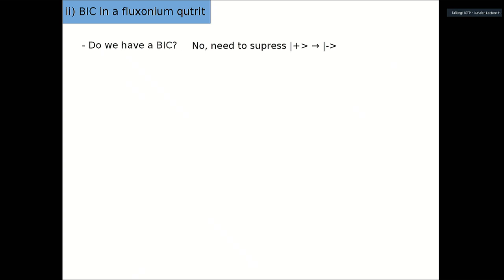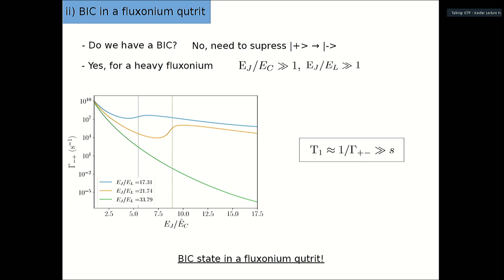Is this a BIC? It doesn't have to be one yet, because even though you have a dark state, the state could still decay from the plus level to the minus level. So we need to suppress this transition. If we suppress it — which can be done by going to a regime of large EJ over EC — we get something like a BIC that is more localized.